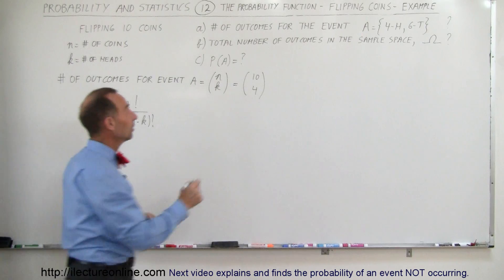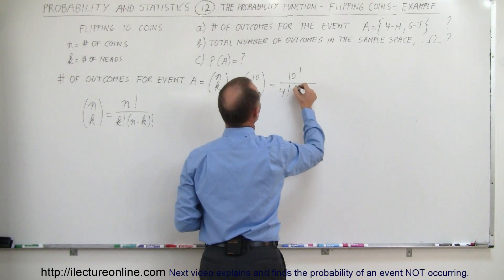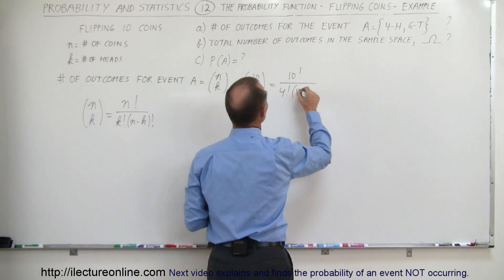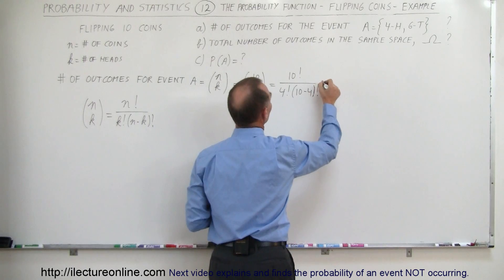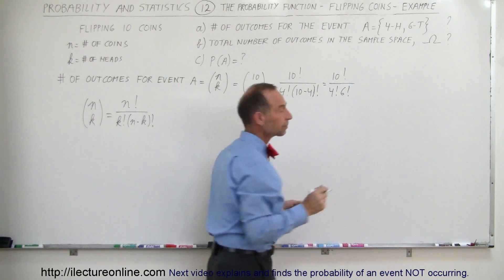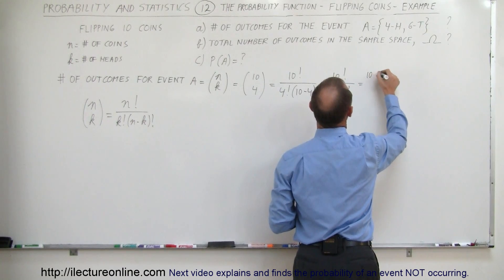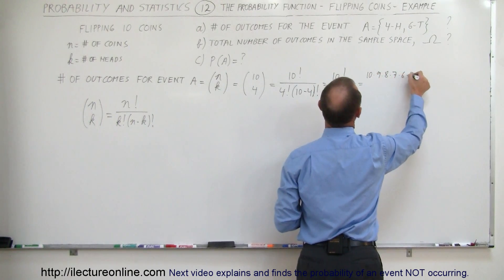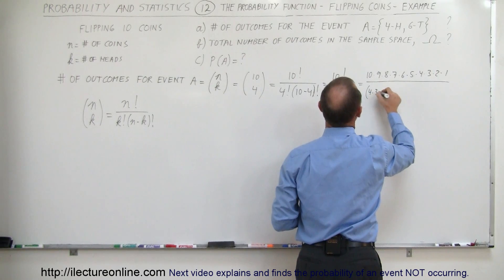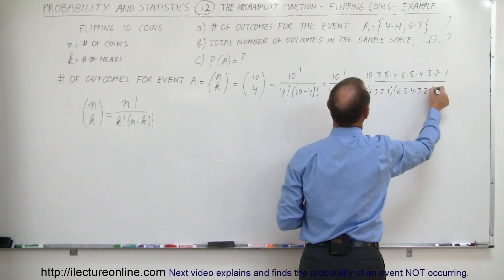So that means this is equal to 10 factorial divided by 4 factorial times 10 minus 4 factorial, which gives us 10 factorial divided by 4 factorial times 6 factorial. To simplify that, we can write it as 10 times 9 times 8 times 7 times 6 times 5 times 4 times 3 times 2 times 1, divided by 4 times 3 times 2 times 1, times 6 times 5 times 4 times 3 times 2 times 1.